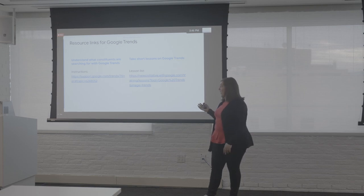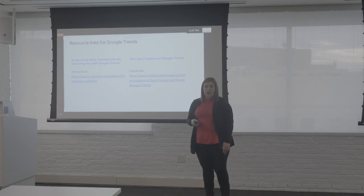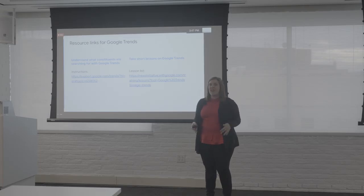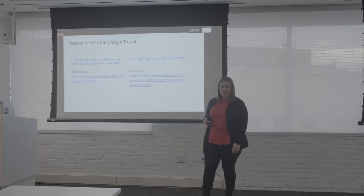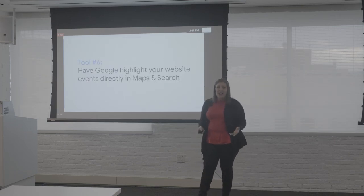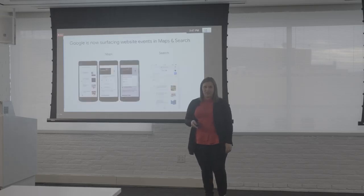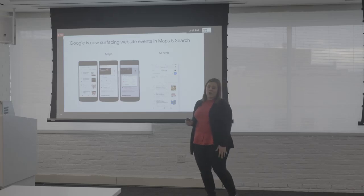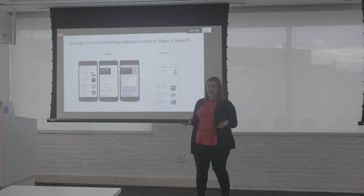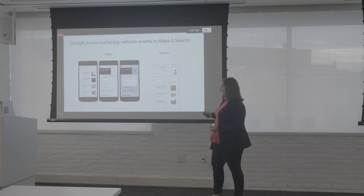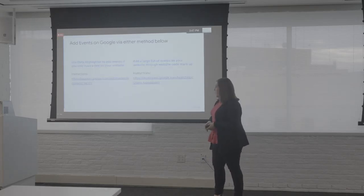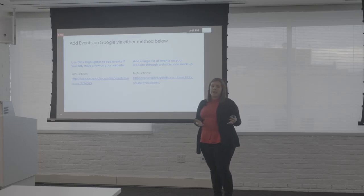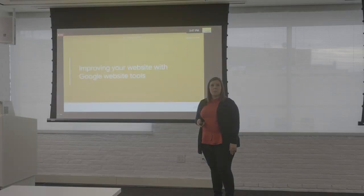Resource links on Google Trends are available — take some time to plug in keywords relevant to your work. Next tool: have Google highlight your website events directly on Maps and Search. If your boss has a tele-town hall or your organization is hosting an event, you can show up in Maps and Search using the correct website markup.